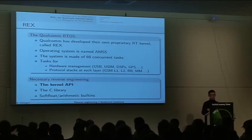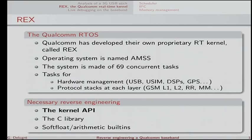Qualcomm has developed its own proprietary real-time kernel called REX, standing for Real-time Executive. The whole operating system — the kernel plus the network stacks and any process — is named AMSS. The system is made of approximately 70 tasks running concurrently in the baseband. There are tasks for handling hardware like USB, UCM, DSPs, and one task for each protocol stack at each layer — such as L1, L2, RRC for WCDMA, and so on.